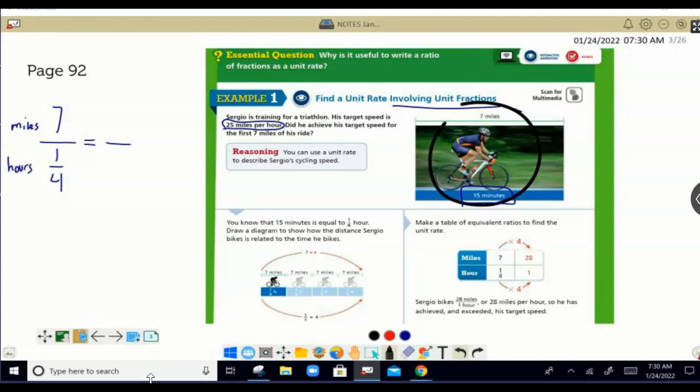We have miles over hours, and we want one full hour. We can see what we need to do here is multiply by four and multiply by four. And that's what they do in the example down below. So 28 miles per hour is it.